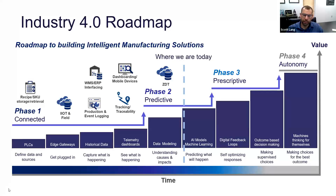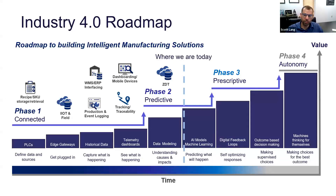Soon computers will be able to take that data and start to make predictions on what's going to occur. Then in phase three, AI and computers make choices about those predictions. And finally in phase four, you'll have autonomous manufacturing where computers and robots will make decisions for themselves based on inputs of vision, sensors, and different things like that.